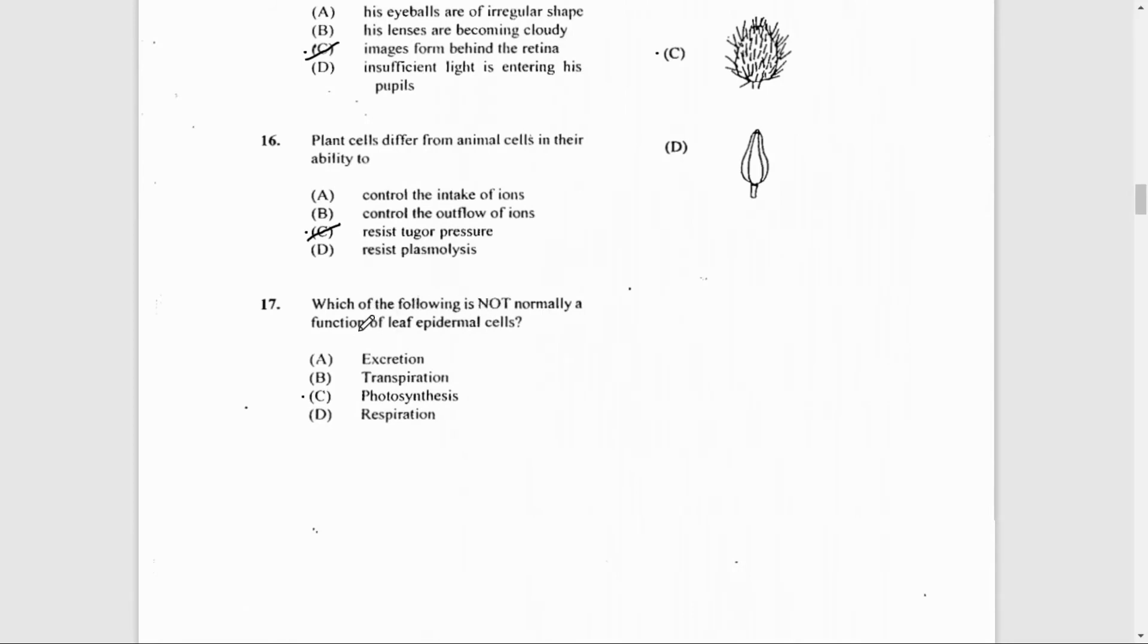Number 17: Which of the following is not normally a function of leaf epidermal cells? That would have to be photosynthesis. Photosynthesis occurs in the mesophyll cells.